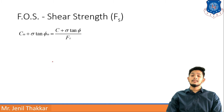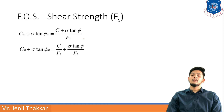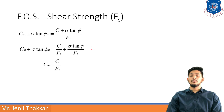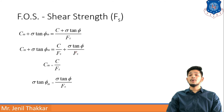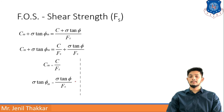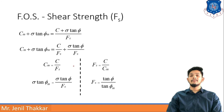Expanding this equation: Fs = (C + σ tan φ) / (Cm + σ tan φ_M). Dividing individually by Fs, we get Cm = C / Fs and σ tan φ_M = σ tan φ / Fs. For purely cohesive soil, use Fs = C / Cm. For purely cohesionless soil, σ cancels and Fs = tan φ / tan φ_M. This is the factor of safety with respect to shear strength.